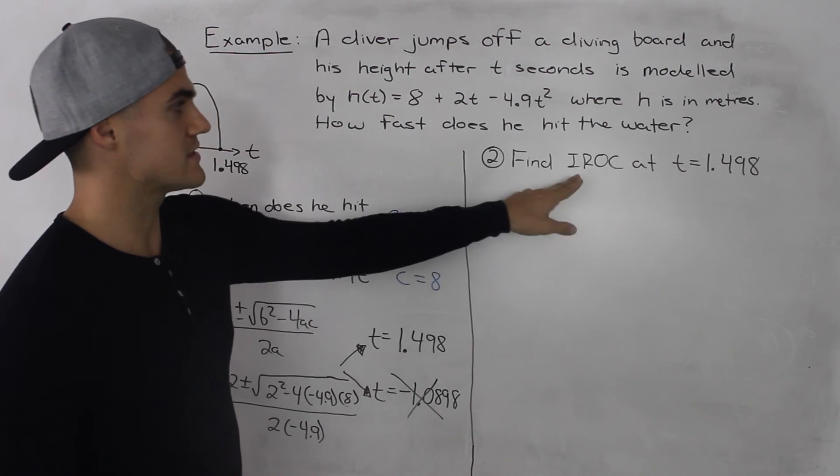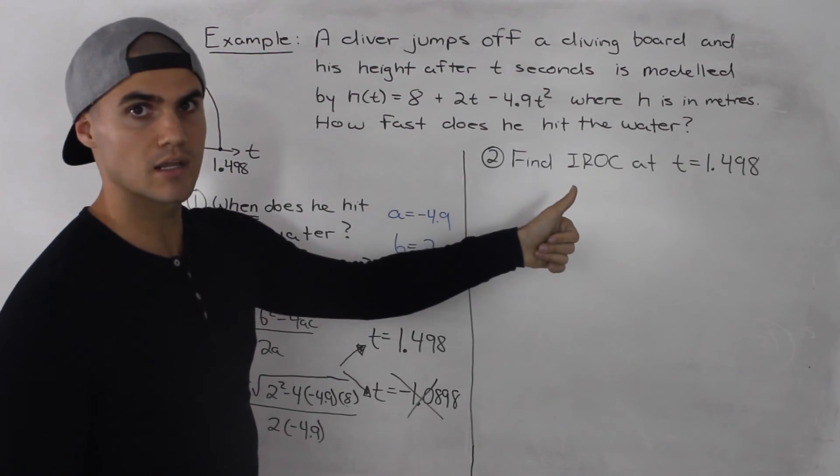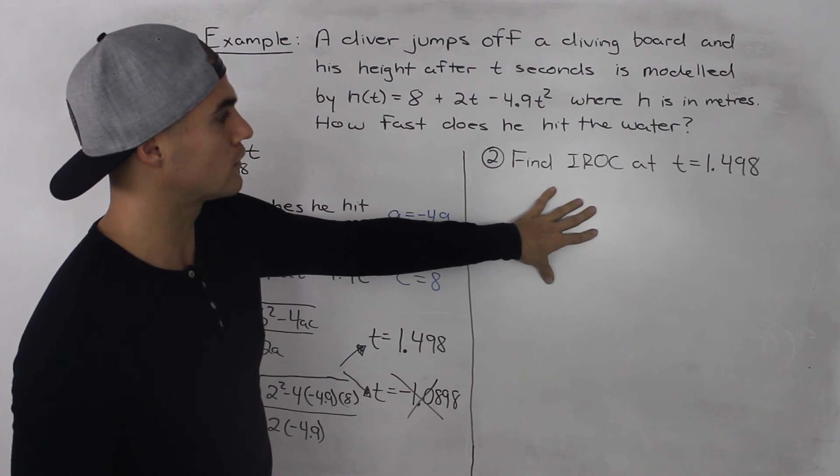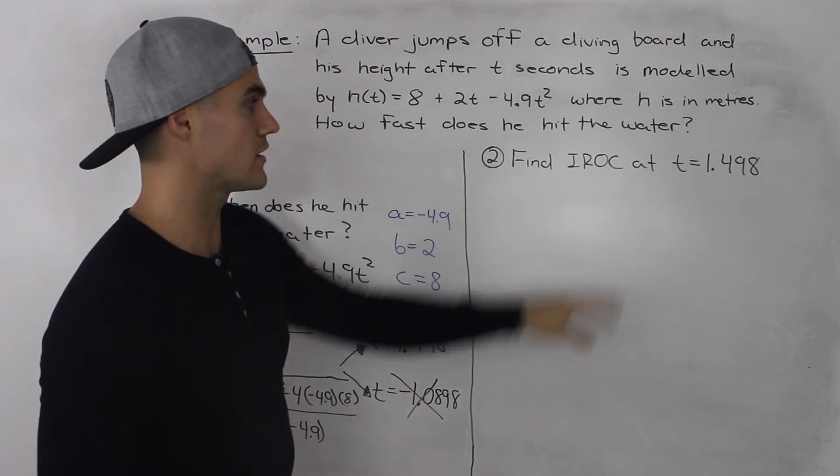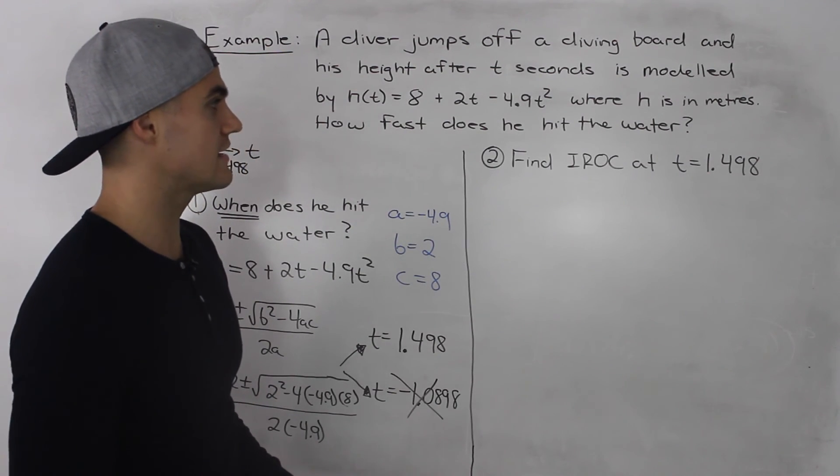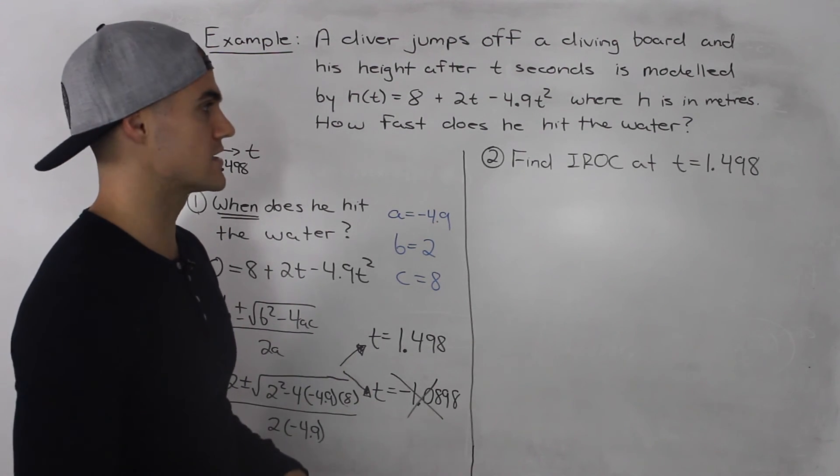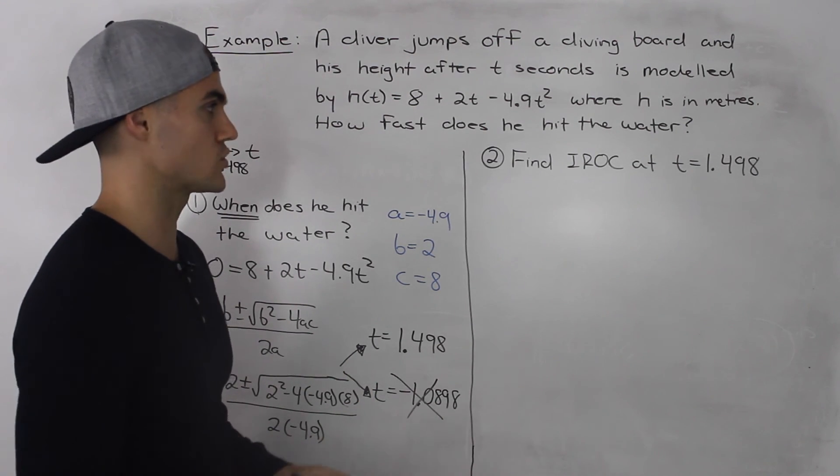There are a couple of ways to find instantaneous rate of change. We can approximate it with the preceding following interval or the centered interval method. But I'm going to get the exact speed in this question. So I'm going to be using the difference quotient.